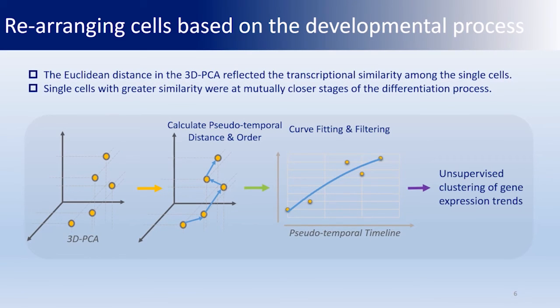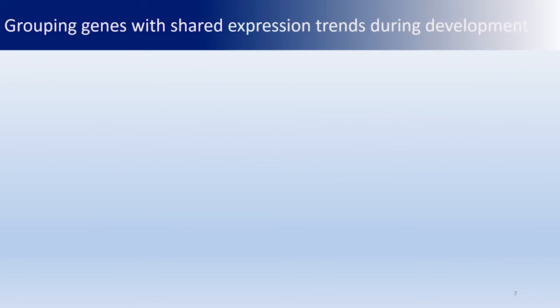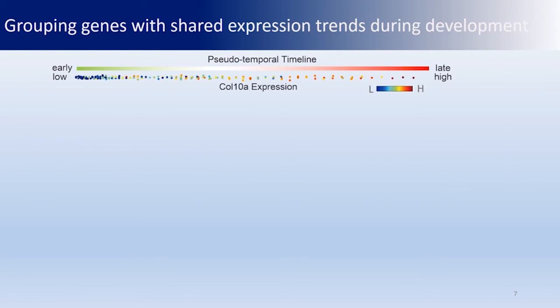Through this rearrangement, all genes were clustered based on their expression trends. As an example, the previously known hypertrophic marker collagen-10 was most highly expressed in the cells corresponding to the late stage of differentiation on the positive temporal timeline.